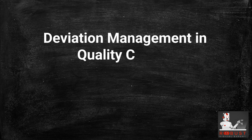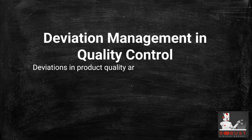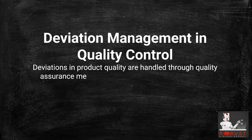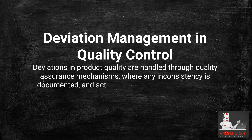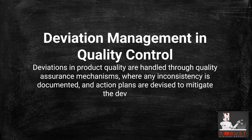Deviation Management in Quality Control: Deviations in product quality are handled through quality assurance mechanisms, where any inconsistency is documented and action plans are devised to mitigate the deviation.